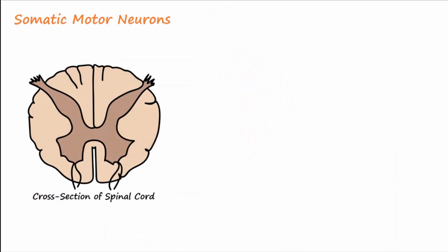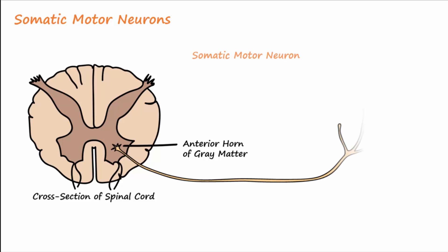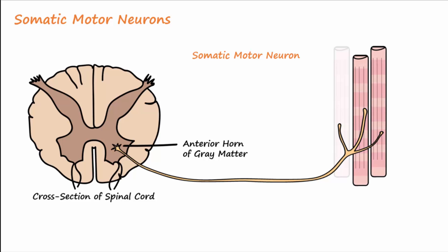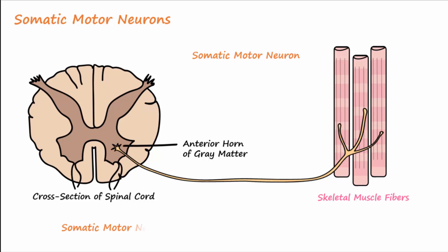Many of the cell bodies of somatic motor neurons are found in the spinal cord, specifically in the anterior horn of the gray matter. The axons of these neurons extend away from the spinal cord to innervate skeletal muscle cells, also called muscle fibers. A somatic motor neuron plus every muscle fiber it innervates make up what's called a motor unit.